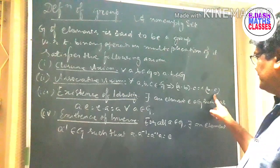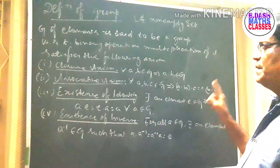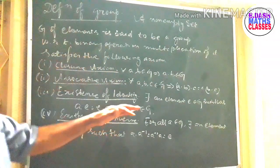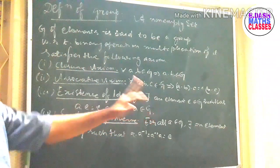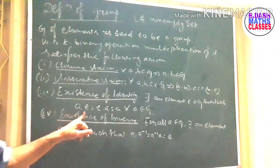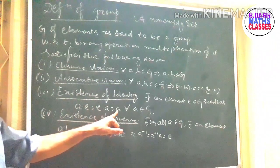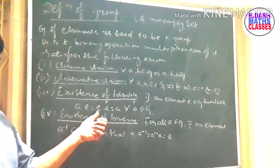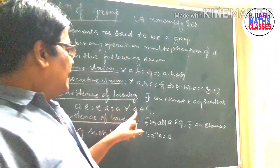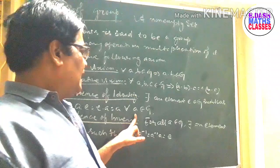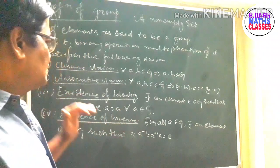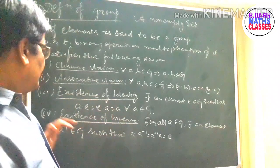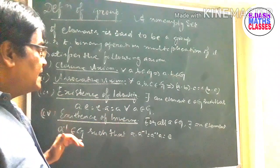The result of a·b multiplied with c should be equal to a multiplied with the result of b·c. That means first we multiply b·c, then multiply by a. Next, existence of identity: there exists an element e belonging to G such that a·e = e·a = a for all a belonging to G. Here e is called the identity element of G.